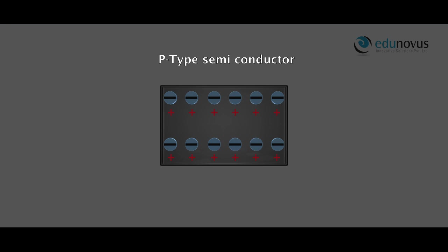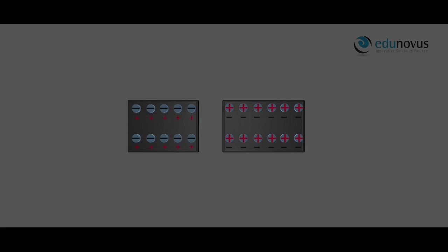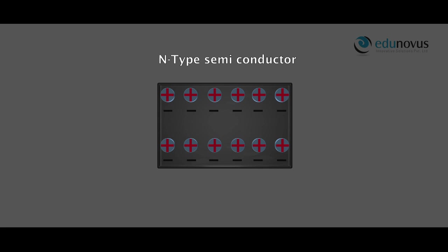A P-type semiconductor is the one which has free holes and impure immobile negative ions. P-type semiconductors have an excess number of holes and they are majority charge carriers. Whereas an N-type semiconductor has free electrons and impure immobile positive ions, so N-type semiconductors have an excess number of electrons as the majority charge carriers.